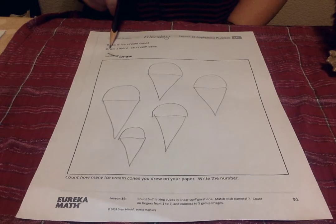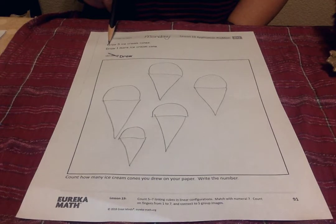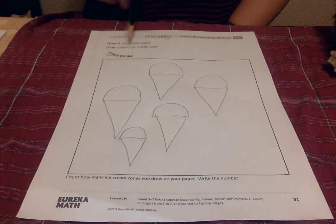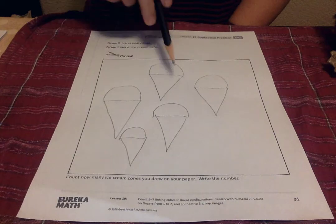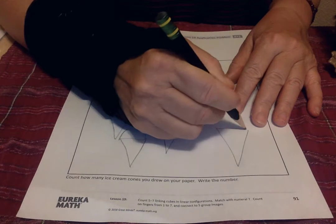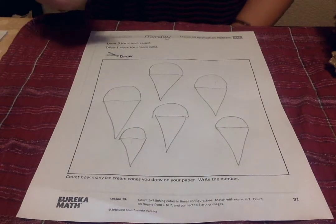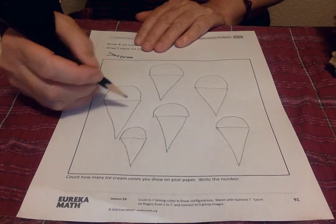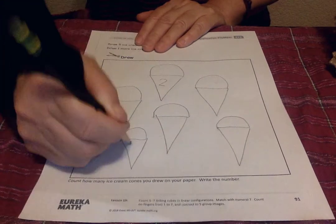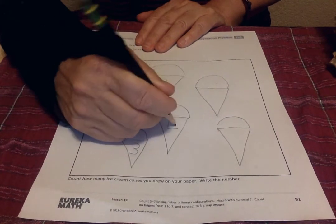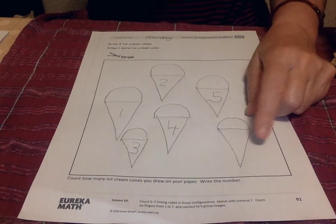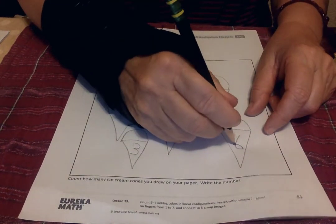Oh, but then it tells me to do something else. That was the first instruction. Here's the second instruction. Draw one more ice cream cone. I have five. I have to draw one more. Hmm. How many do I have now? Let's count them. I could even put my numbers on it. One, two, three, four, five. That was my five. And then I did one more. So that is six.